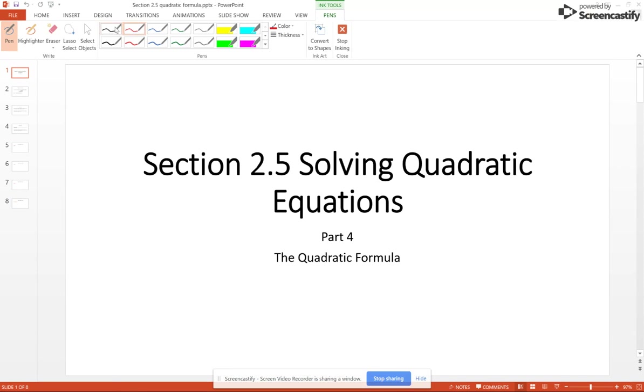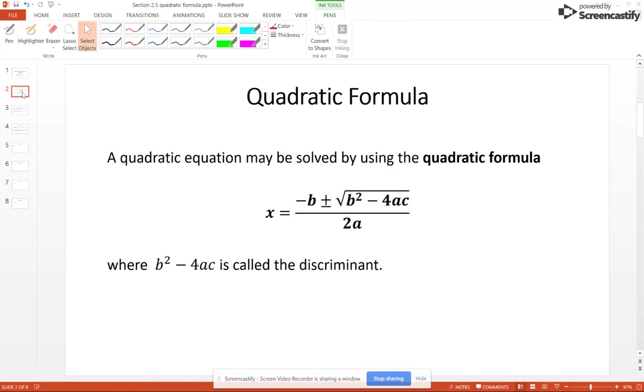To solve quadratic equations, we are talking about the generic quadratic equation ax squared plus bx plus c equals 0. If you take this generic equation and complete the square on it, you end up with the quadratic formula, which is x equals negative b plus or minus square root b squared minus 4ac over 2a.